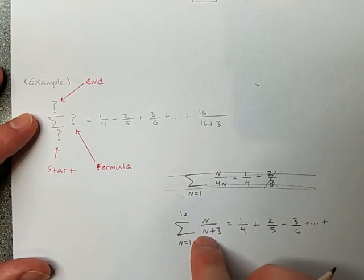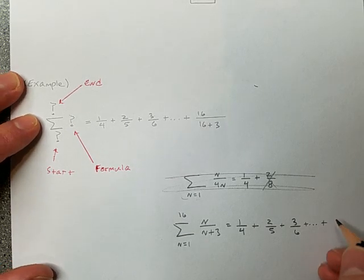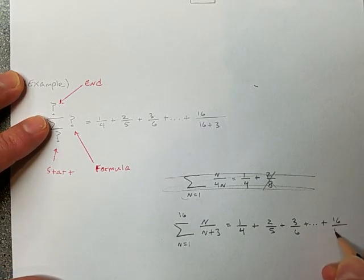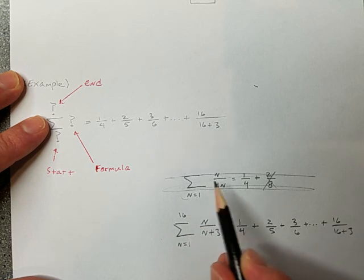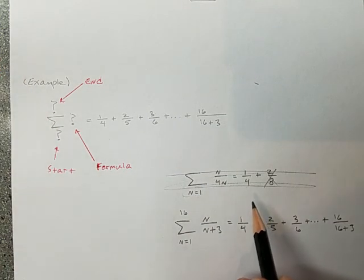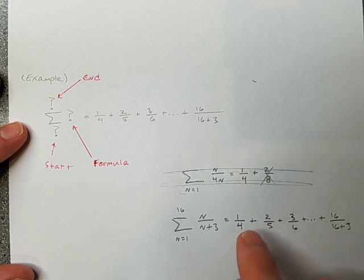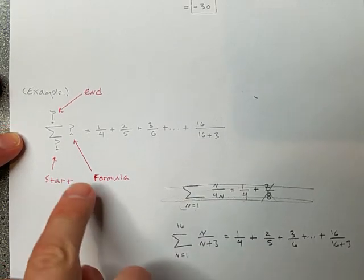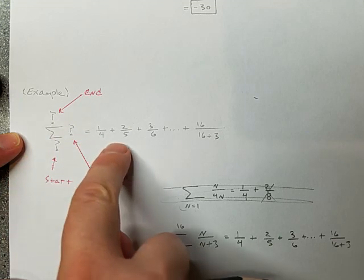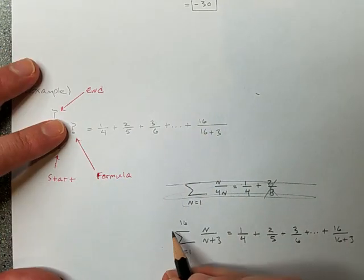You're going to get 16 over 16 plus 3. It's going to get you that last term. So it works. I tried something. I checked it. I saw that it wasn't right. I reformulated it. I checked it. And I see that this formula with that beginning and end creates that sequence. So that's what I was after.